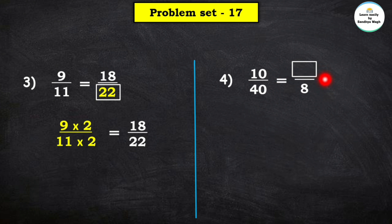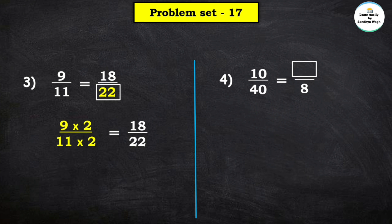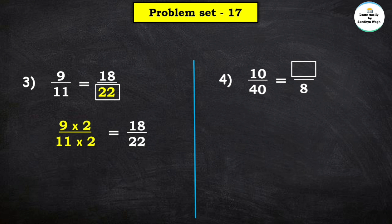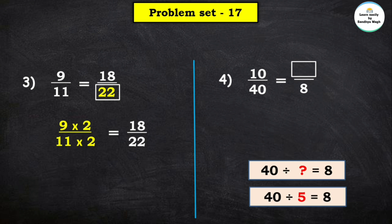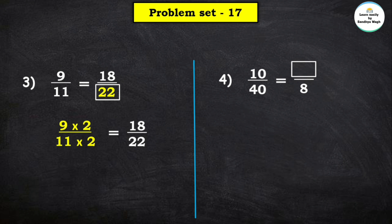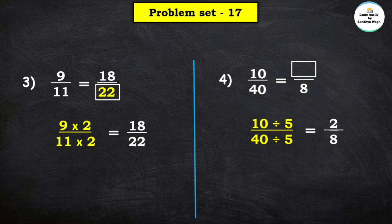Next question: 10 upon 40 equals blank upon 8. The denominator of the second fraction is 8, which is smaller than 40, so we use division. 40 divided by which number equals 8? 40 divided by 5 equals 8. So we divide both numerator 10 and denominator 40 by 5: 10 divided by 5 is 2, and 40 divided by 5 is 8. Therefore 2 upon 8 is the equivalent fraction of 10 upon 40.